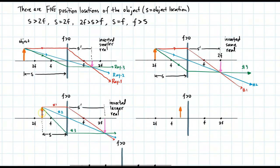When the object is between 2F and F, drawing the three rays produces an image on the other side. The image in pink is inverted, larger than the object, and real because it's on the other side of the lens.